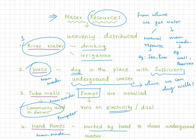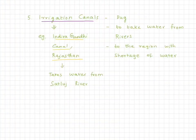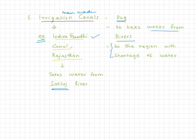Number four: hand pumps — man-made and used to draw underground water manually. Number five: irrigation canals, which take river water to regions with shortage of water. For example, the Indira Gandhi Canal from the Sutlej River supplies water to the desert region of Rajasthan.